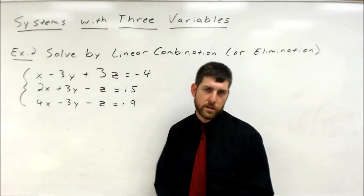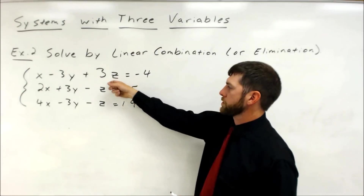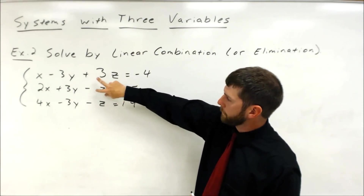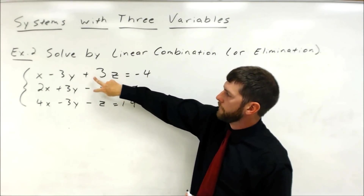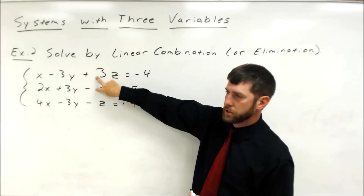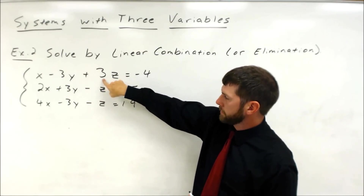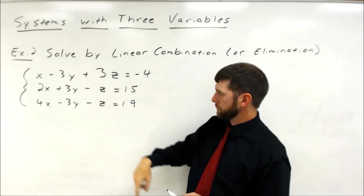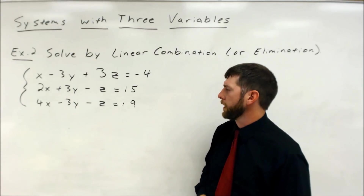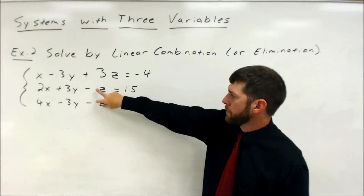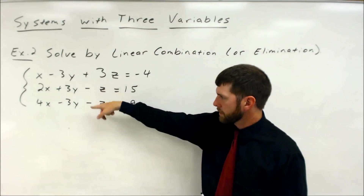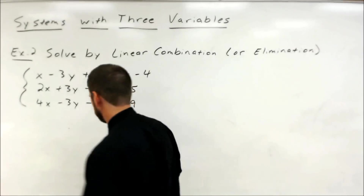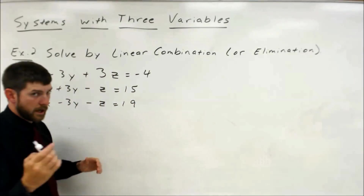So negative 3, positive 3, negative 3, positive 3 — we could group the first two and the second two and work from there. But I'm going to focus on the z's since they're a little bit different. I'm going to pair up the first two equations and get the 3 and the negative 1 to be the same. Then pair up the bottom two equations and get the negative 1 and negative 1 to be opposites.